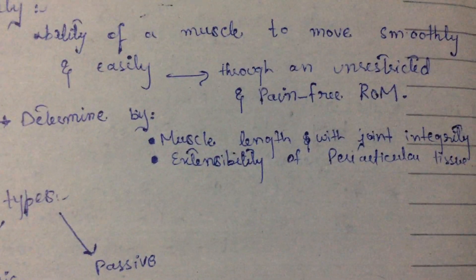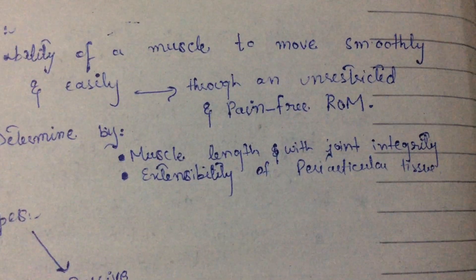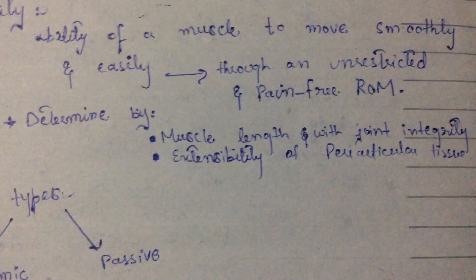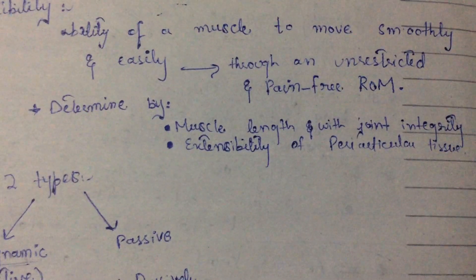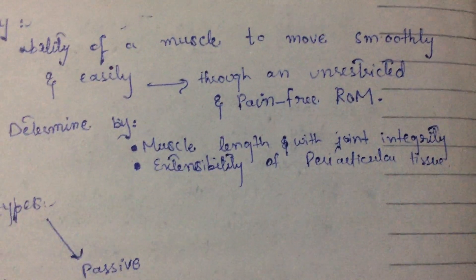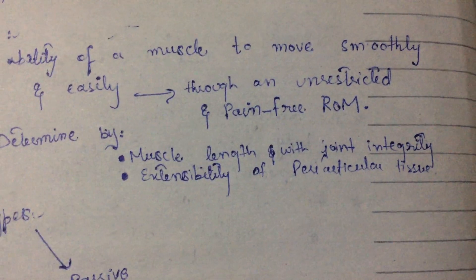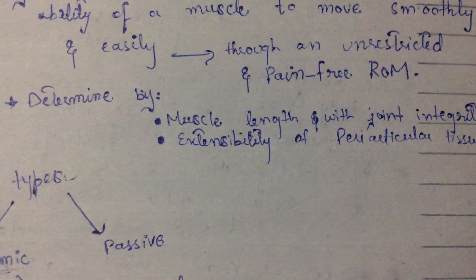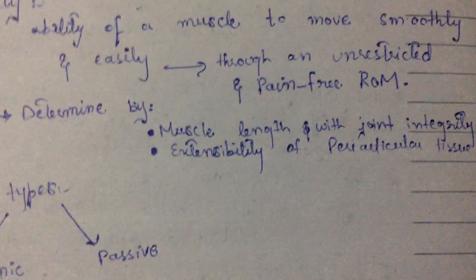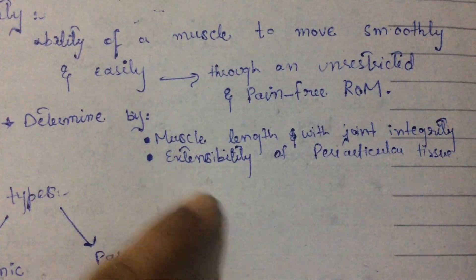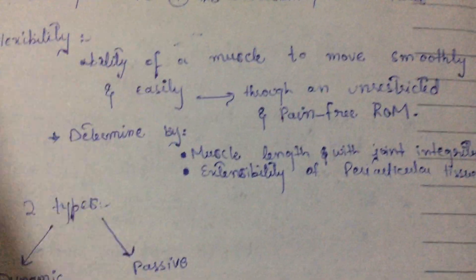Extensibility refers to how much the periarticular tissues can extend. Periarticular tissues are the tissues that surround the joint — these are connective tissues and other tissues surrounding the joint, including muscles, tendons, and joint capsules. If extensibility increases, flexibility also increases. There are two types of flexibility: dynamic and passive.